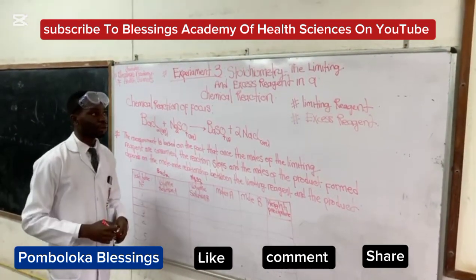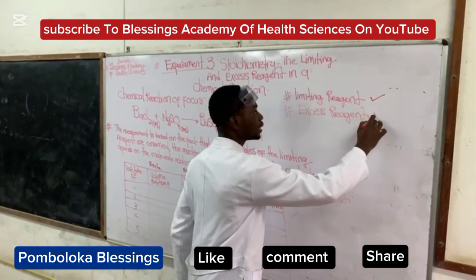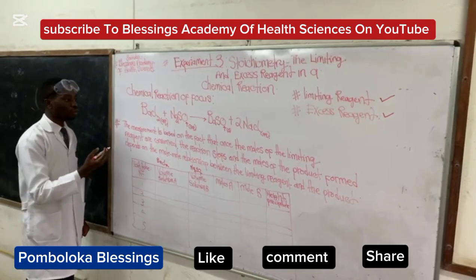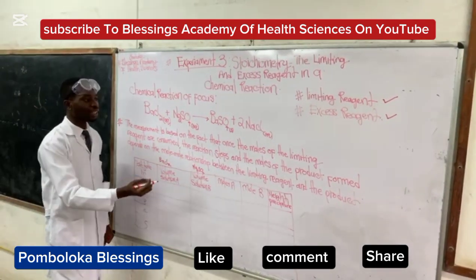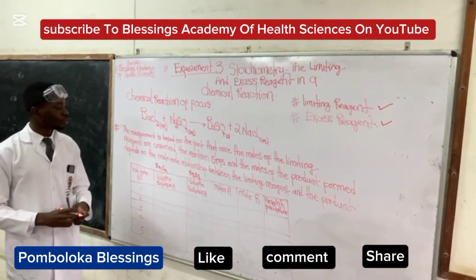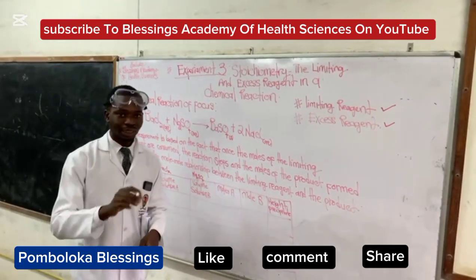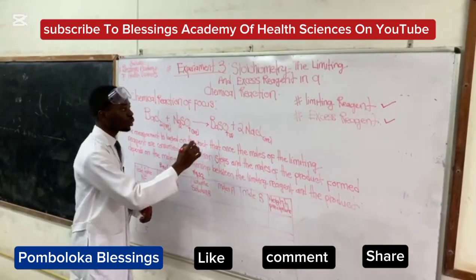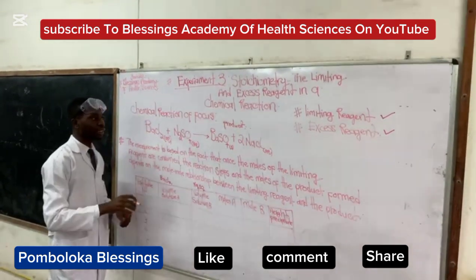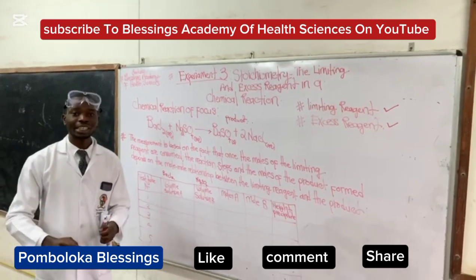There are two important concepts here: the first is the limiting reagent and the second is the excess reagent. An important note is that the reaction is based on the fact that once all the moles of the limiting reagent are consumed, the reaction stops. The moles of product formed depend on the mole-to-mole relationship between the limiting reagent and the product, meaning the product yield is determined by the limiting reagent.